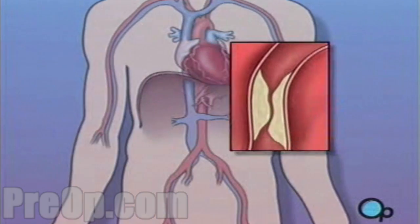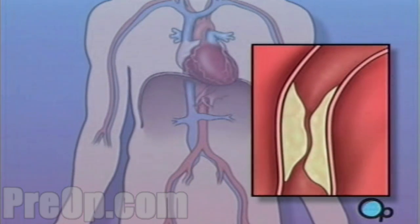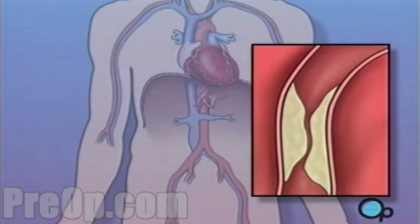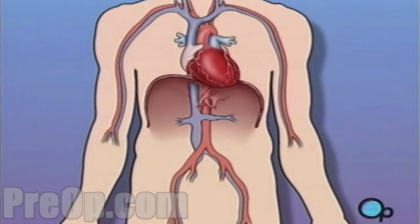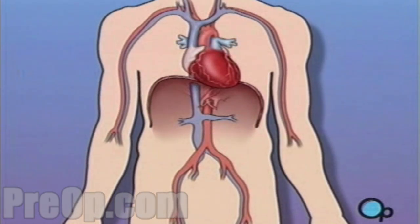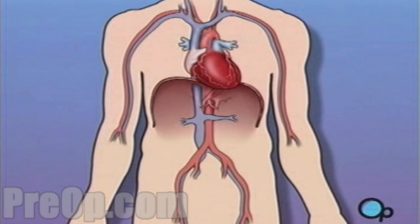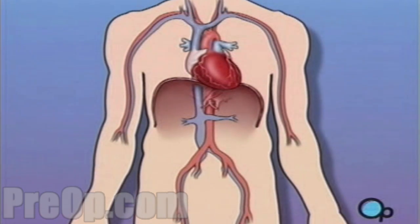Sometimes these blood vessels can narrow or become blocked by plaque deposits, restricting normal blood flow. In simple terms, a balloon angioplasty with stent insertion is a procedure used to increase the amount of blood flowing through the coronary artery.